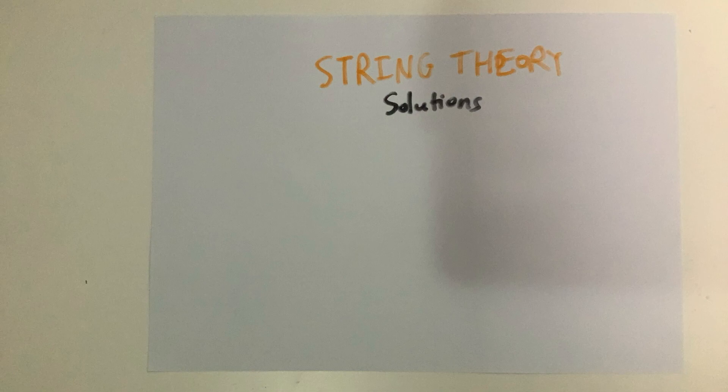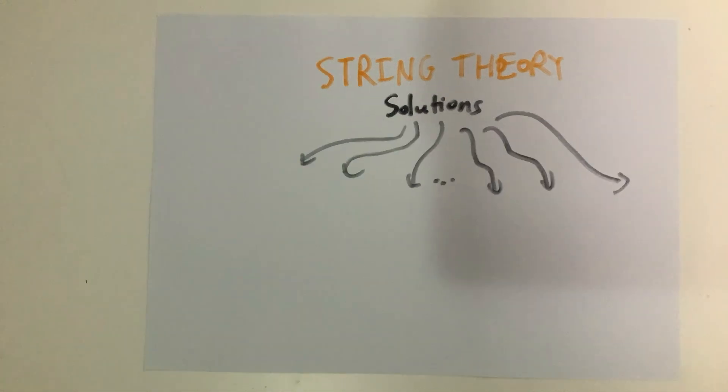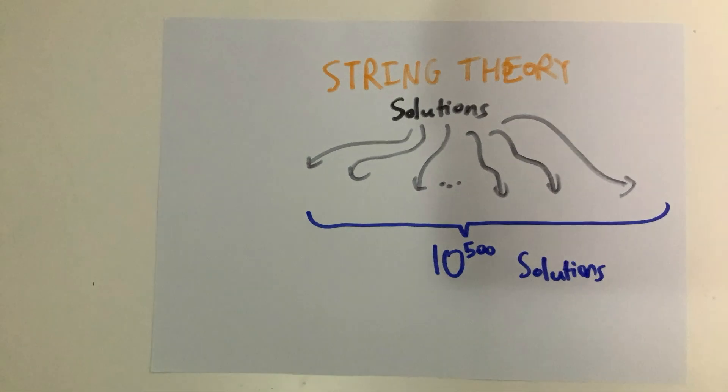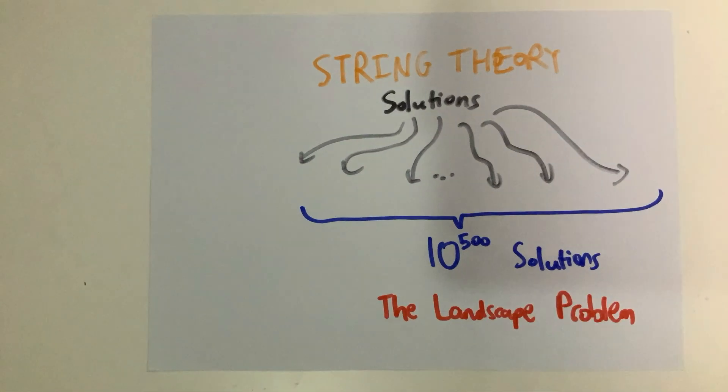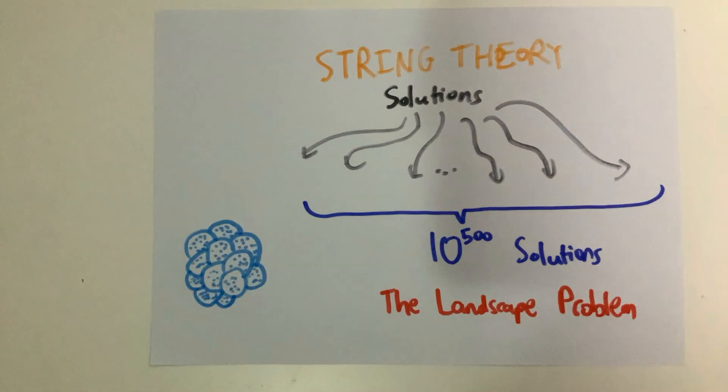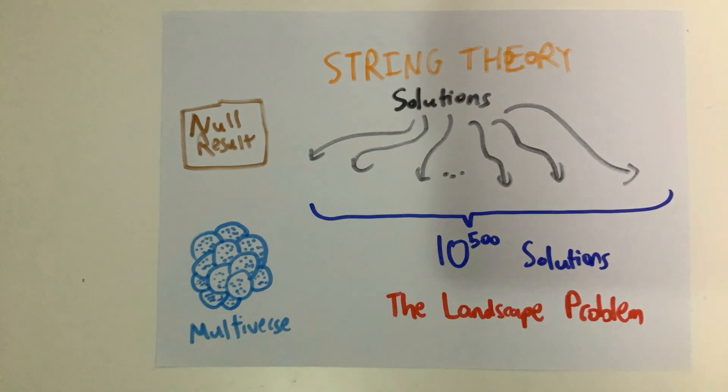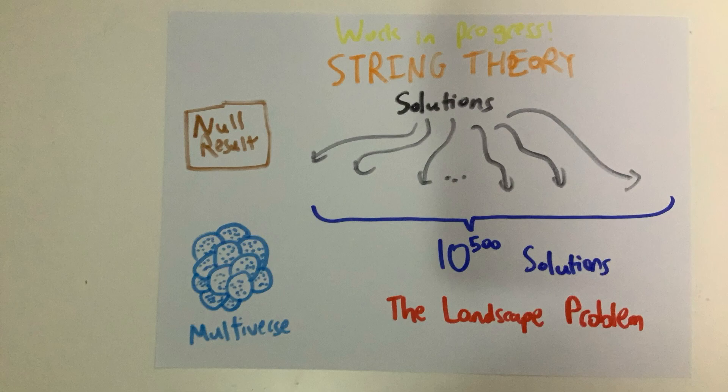Even when we get rid of the extra dimensions, however, string theory still opens up a new can of worms. Because of its nature, string theory returns many different solutions rather than one. There are somewhere around 10 to the 500 different solutions. This is now called the landscape problem, and it leads to other complications like the existence of a multiverse and lack of reliable experimentation. So string theory is still a nascent idea, and no theory of quantum gravity has been completed.